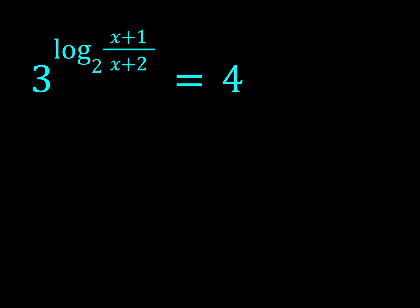We have 3 to the power log of x plus 1 over x plus 2 with base 2 and that is equal to 4. Now notice that 3 and 4 are not related, right? I mean obviously 4 is not a power of 3 but we can still do something about it.